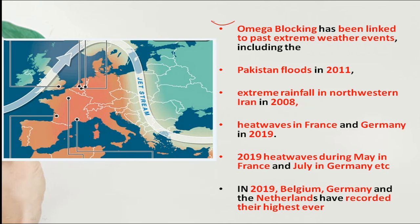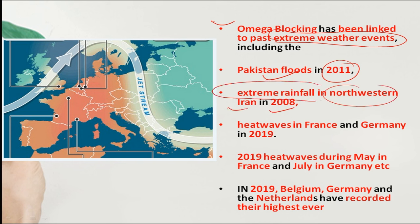Omega blocking has been linked to past extreme weather events. In Pakistan there were floods in 2011, extreme rainfall in northwestern Iran in 2018, heat waves in France and Germany in 2019. In 2019, Belgium, Germany, and the Netherlands recorded their highest ever temperatures, all because of omega blocking.